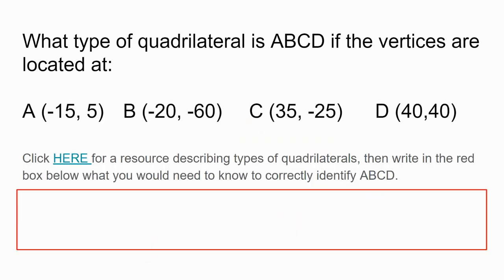Now, let's consider a quadrilateral defined by points A, B, C, and D. What type of quadrilateral could it be? There are many types of quadrilaterals, from parallelograms to kites. Pause here and review the resource describing different types of quadrilaterals. And then, just like you did before, write what information you would need to be able to identify this shape.